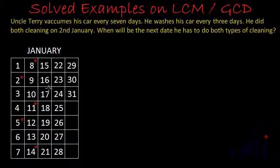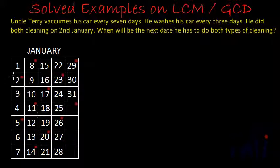He will wash on 17th, then 20th, 23rd, 26th, and 29th. Next he will wash on 1st of February. He vacuums his car every 7 days, and last he vacuumed was on 2nd of January. Again we will start from 2nd of January — on 2nd of January he has vacuumed his car.